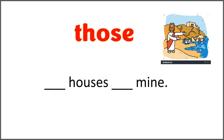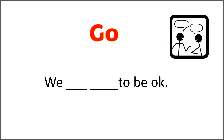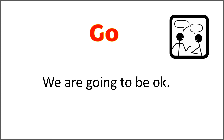The given word is 'those,' and the sentence is 'blank houses blank mine.' Use the word 'those' with 'are' to complete the sentence. Those houses are mine. But they are not looking in great shape. The given word is 'go' and the sentence is 'we blank blank to be okay.' Use the word 'go' with 'are' to complete the sentence. We are going to be okay.